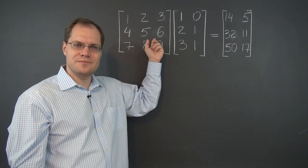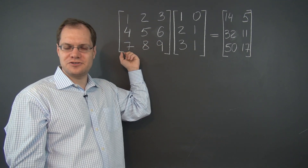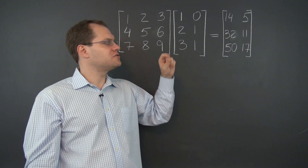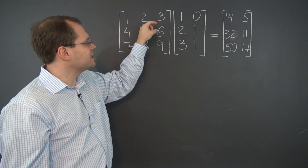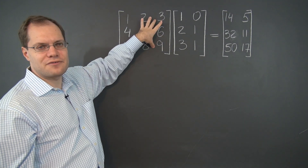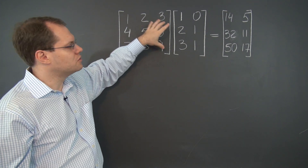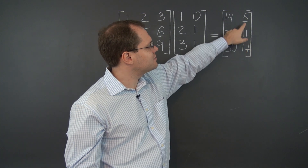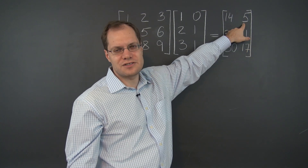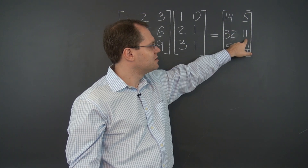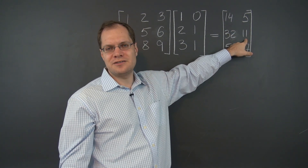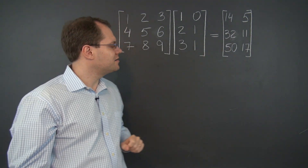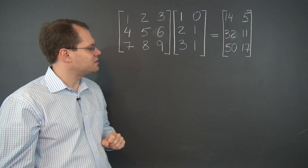What's the column space of this matrix? It's the set of all vectors whose middle entry is the average of the other two. Let's make sure that still holds here: 17 plus 5 is 22, and the middle entry, 11, is once again the average of the other two.